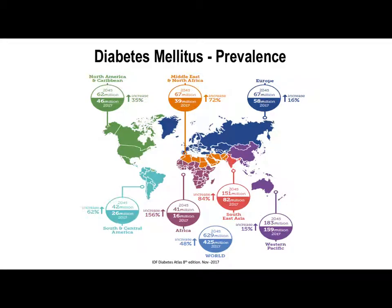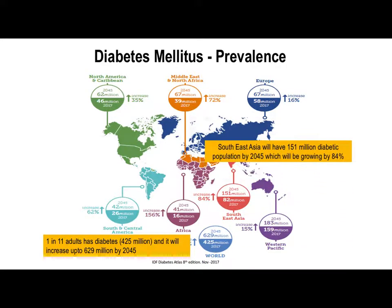India is not only the diabetes capital, which is going to become even more apparent in the coming decades. In fact, the incidence rate compared to the general population is one of the highest in the world — we are just second to China. And when we are talking about cardiac complications, we are also one of the cardiac disease capitals of the world.